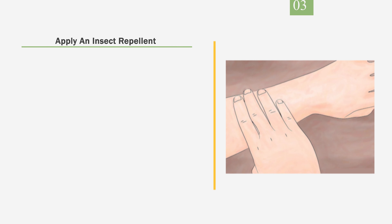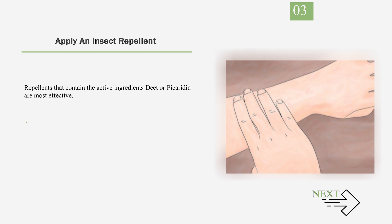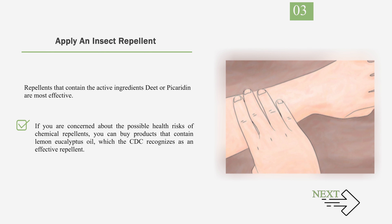Number 3: Apply an insect repellent. Repellents that contain the active ingredients DEET or picaridin are most effective. If you are concerned about the possible health risks of chemical repellents, you can buy products that contain lemon eucalyptus oil, which the CDC recognizes as an effective repellent.